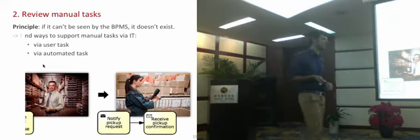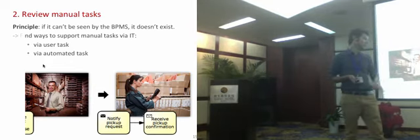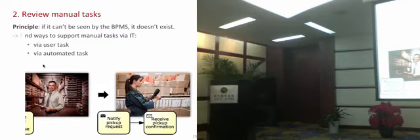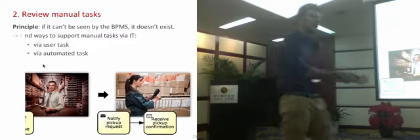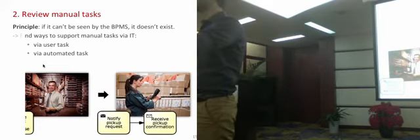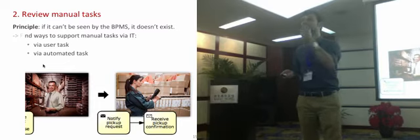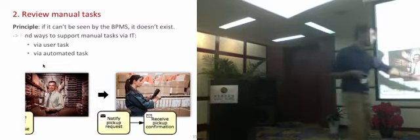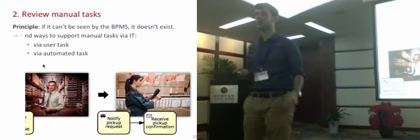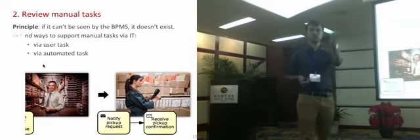A perhaps more clever option is to replace that with a sequence of a send task and a receive task. First, the warehouse worker receives a notification by email on their smartphone that there's a new package to pick up. They go to the shelves, pick the package, and once placed correctly, scan a barcode with a barcode scanner connected to the BPMS. That automatically notifies the BPMS that the package has been picked up — a receive pickup confirmation. The barcode scanner sends a notification through an interface to the BPMS, which is more convenient since no form needs to be filled out.